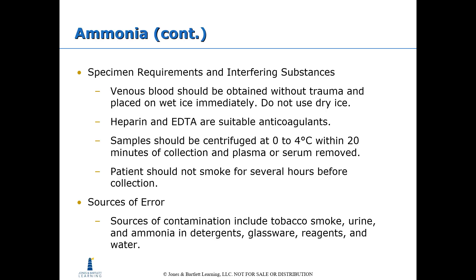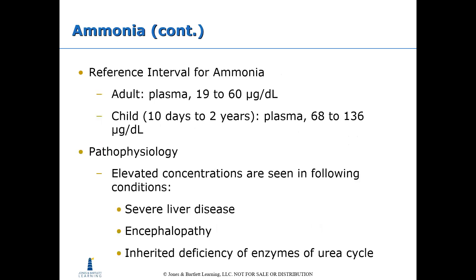For specimen collection, blood should be obtained without trauma and placed on wet ice immediately — do not use dry ice. Heparin and EDTA are suitable anticoagulants. Samples should be centrifuged at 0–4°C within 20 minutes of collection and plasma or serum removed promptly. Patients should not smoke for several hours before collection. Sources of contamination include tobacco smoke, urine, and ammonia in detergents, glassware, reagents, and water. Elevated concentrations of ammonia are seen in severe liver disease, encephalopathy, and inherited deficiency of urea cycle enzymes.